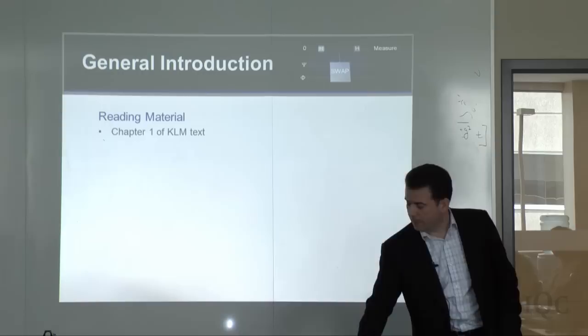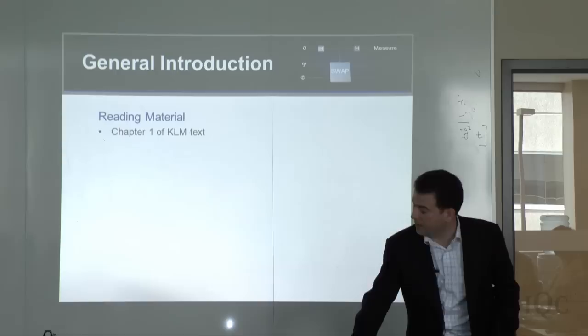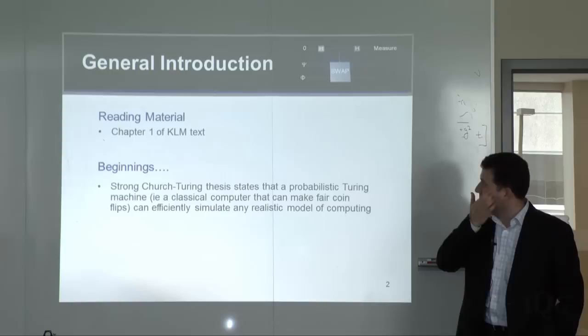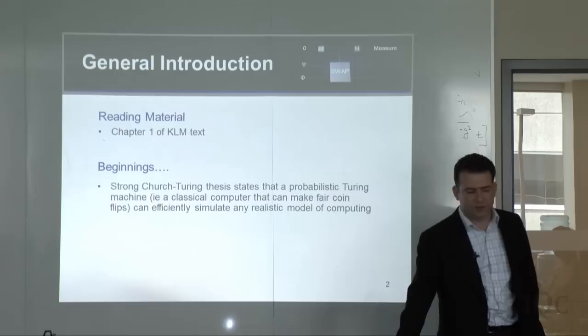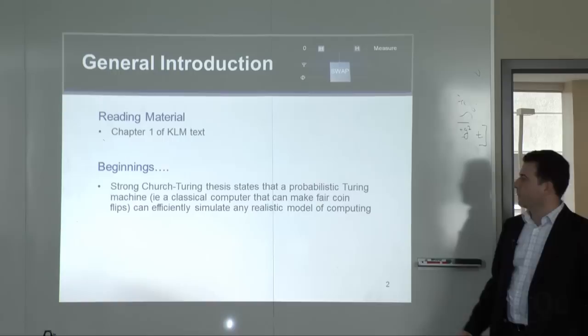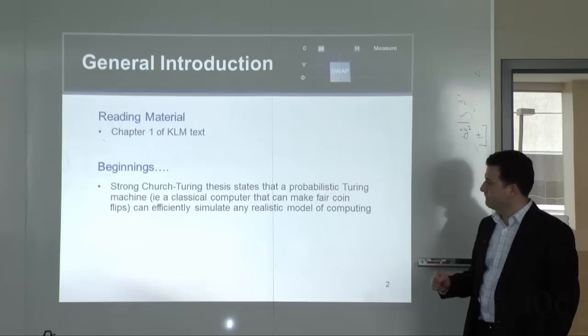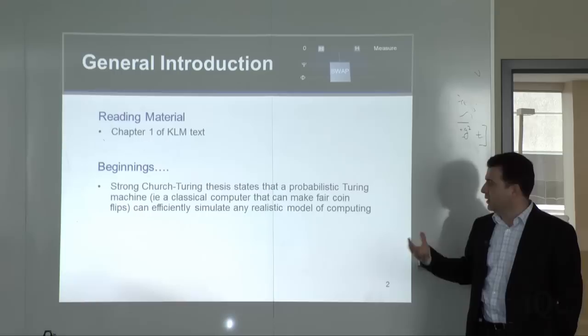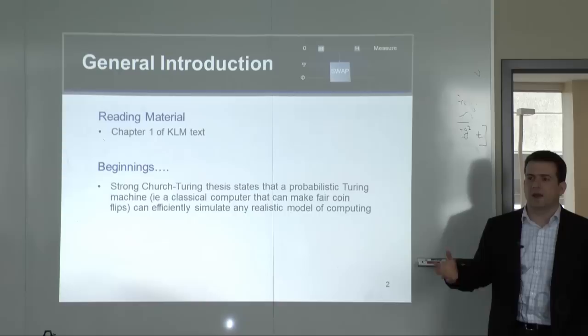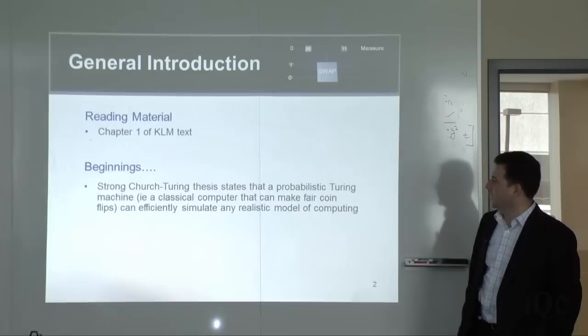Starting from chapter one of the Knill-Laflamme-Mosca textbook, I'd like to start with the strong Church-Turing thesis. It states that a probabilistic Turing machine — essentially a classical computer with some true randomness — can efficiently simulate any realistic model of computation. If you remove 'efficiently' you remove the word 'strong.' The original Church-Turing thesis was about computability: a Turing machine, a classical deterministic computer, can compute anything that is computable.